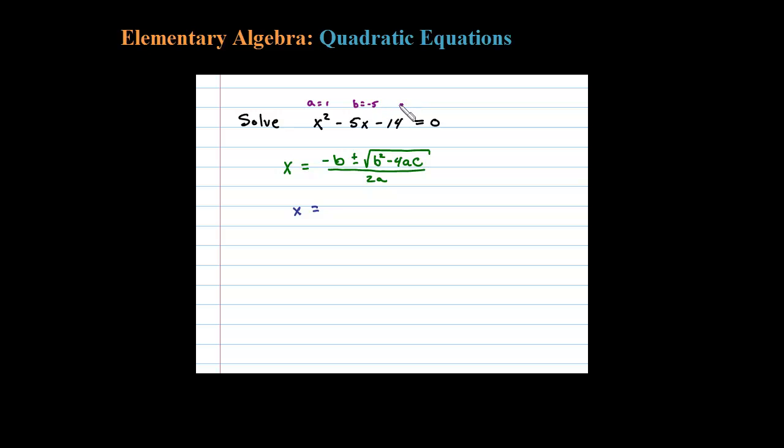So when I substitute in those numbers, I have negative B plus or minus the square root of B squared, so negative 5 squared, minus 4 times A times C. That's inside the square root, all divided by 2 times A.